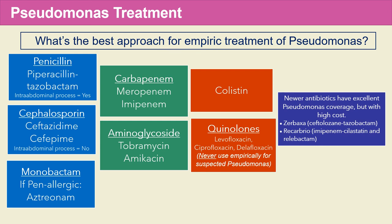Finally, newer antibiotics have excellent Pseudomonas coverage. These are Zerbaxa, a combination of ceftolozane and tazobactam, and Recarbrio, which is a combination of imipenem, cilastatin, and relebactam. Both have an enzyme inhibitor attached to the primary antibiotic that gives excellent Pseudomonas coverage; however, both have a very high cost. It's very important to know all of these antibiotics and which ones are used to treat Pseudomonas.